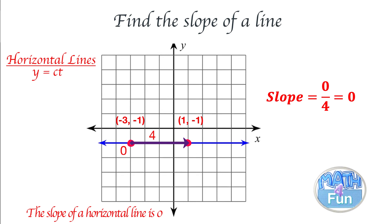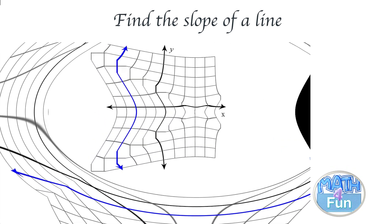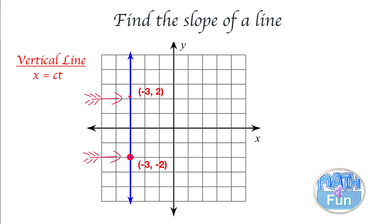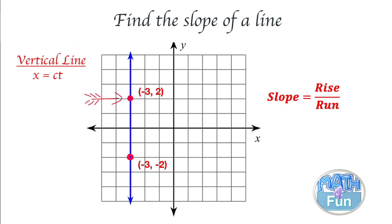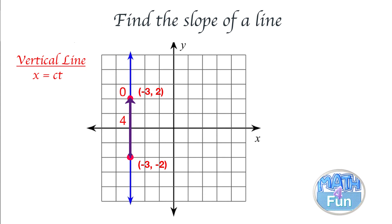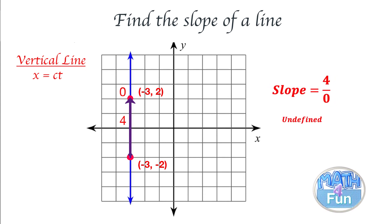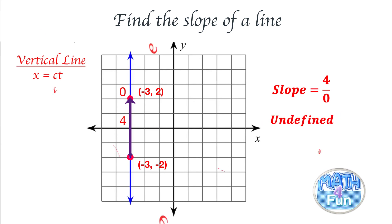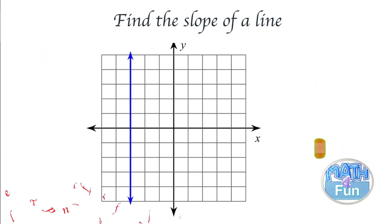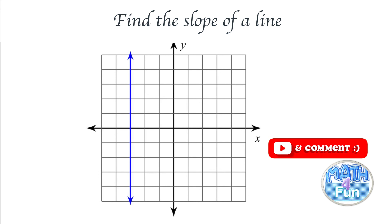Now let's check the vertical line. Let's pick two points: negative three, negative two and negative three, two. The slope equals rise over run. The rise is one, two, three, four. The run — we're not going left, we're not going right — so the run is zero. The answer is four over zero, which is undefined. Remember this rule: the slope of a vertical line is undefined.